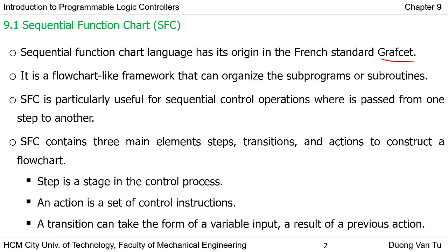The SFC language contains three main elements. The first element is the step — the state of the control process. For example, in the mixer system, filling the material is a state of the control process, or mixing the compound is also a state. So we define a step as a state in the control process. The second element is the action — a set of control instructions, meaning the content for every step. In each step we implement something, like turning on a lamp or turning on a valve.